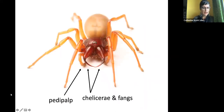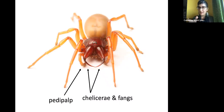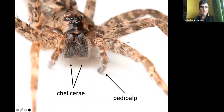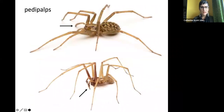Spiders also have bits at the front called pedipalps, which are like a smaller pair of legs — almost like arms — that they use to manipulate food and to taste. They also have fang-tipped chelicerae, which are the mouthparts, the business end of the spider. Here's another spider with different-looking versions of the chelicerae and the pedipalps.